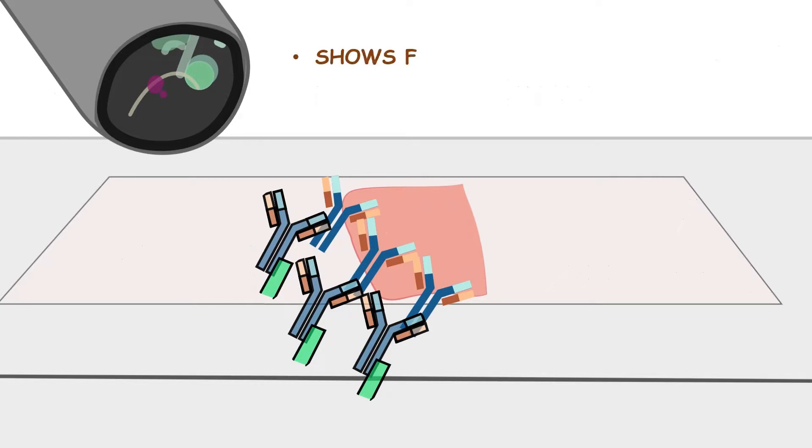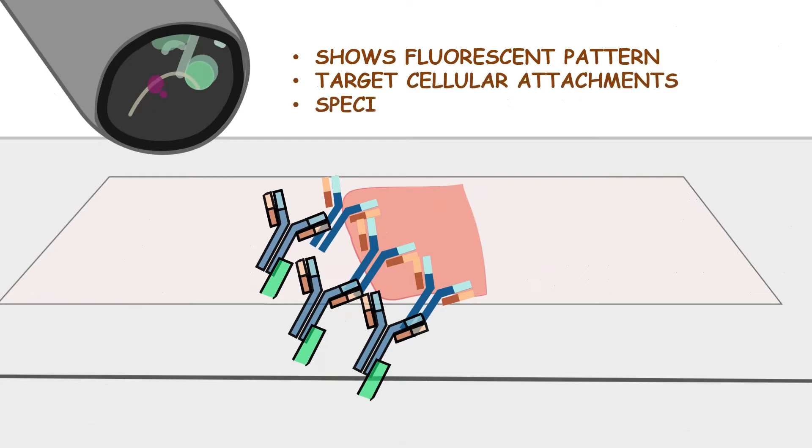It helps show off the fluorescent pattern and indicate the cellular attachments against which autoantibodies have been formed. It also helps locate their specific sites.